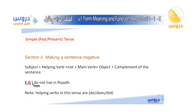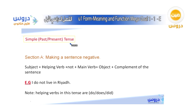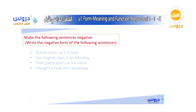For example: 'I do not live in Riyadh.' We start with the subject 'I,' then the helping verb 'do,' then 'not,' then the main verb 'live,' then the object, and then the complement of the sentence. The helping verbs we use are always 'do,' 'does,' or 'did' — whether the sentence is in the past or present tense. More examples will follow.